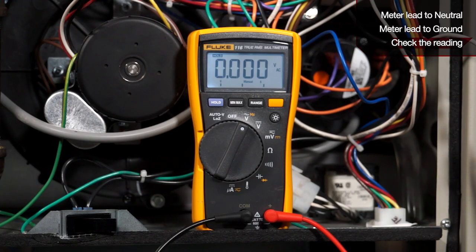A good reading is anywhere between 0 and 0.5 VAC volts. If you're reading any more than 0.5, this can give you intermittent flame failure or intermittent codes.